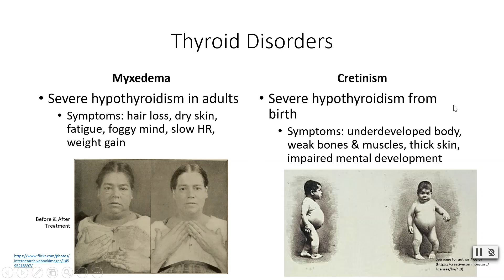Cretinism is severe hypothyroidism from birth — immediately something is wrong. These patients suffer from underdeveloped bodies, weak bones and muscles, very thick skin, and impaired mental development. As long as it can be diagnosed, it can be treated, but it tends to still be an issue in some third-world countries.